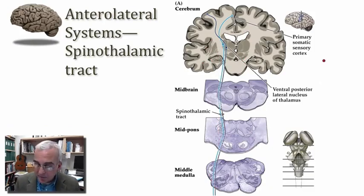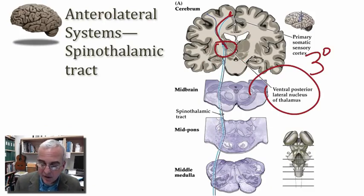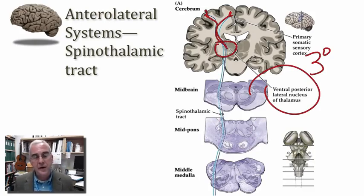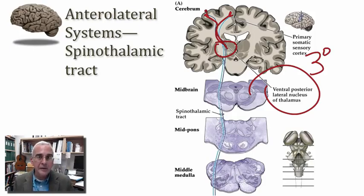The VPL of the thalamus is the source of our third-order neuron in this pathway. The third-order neuron then sends its axons into the somatotopically appropriate region of the postcentral gyrus. From there, this information about sharp shooting pain can be somatotopically localized due to access to the somatotopic map found in the postcentral gyrus.